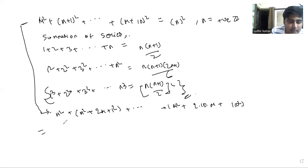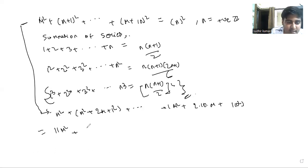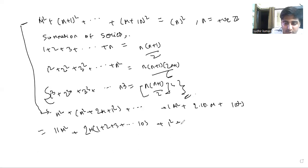This sum can be written as 11m² — since there are 11 terms — plus 2m times (1+2+3+...+10), plus (1²+2²+...+10²).